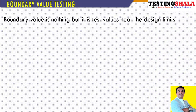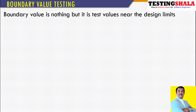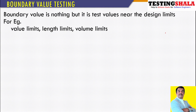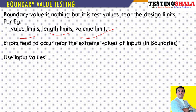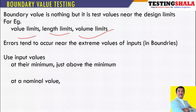This is a second type of design technique in black-box testing. We will try to see the boundary values here, which are near the various borders like value limits, length limits, or volume limits. For example, we will try to check for the extreme values of an input at the boundary or border.